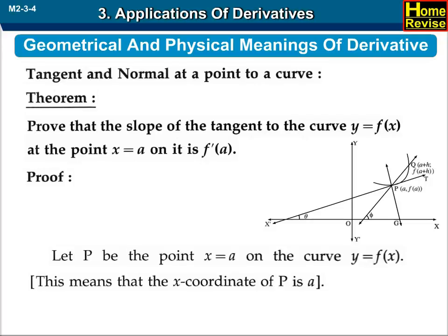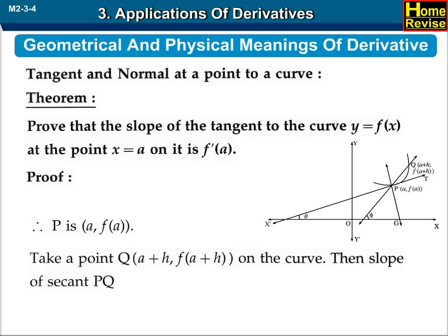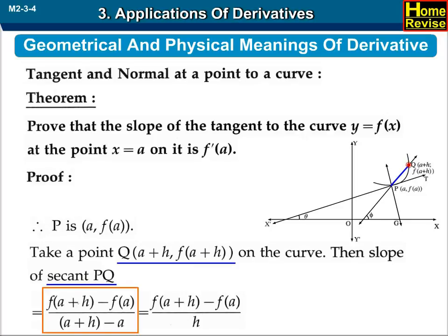Proof. Let P be the point x equals a on the curve y equals f of x. This means that the x-coordinate of P is a. Therefore, P is the point (a, f(a)). Take a point Q at (a plus h, f(a plus h)) on the curve. Then the slope of secant PQ equals f(a plus h) minus f(a), upon a plus h minus a, which equals f(a plus h) minus f(a) upon h.